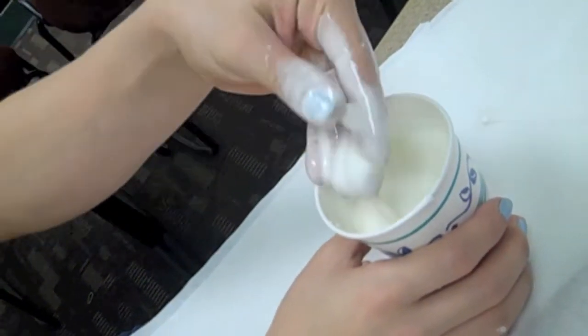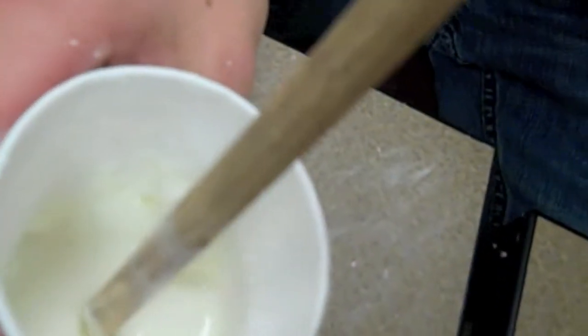The cornstarch and water was still watery, but it had a high surface tension when we poked it.